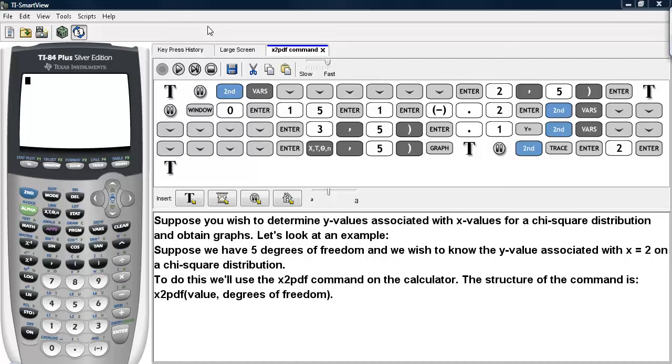Suppose you wish to determine y-values associated with x-values for a chi-square distribution and obtain graphs. Let's look at an example. Suppose we have 5 degrees of freedom and we wish to know the y-value associated with x equals 2 on a chi-square distribution.